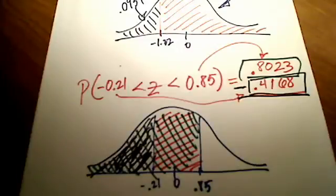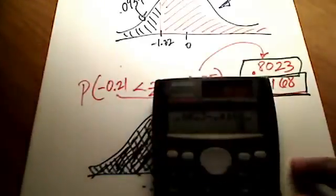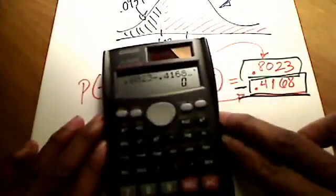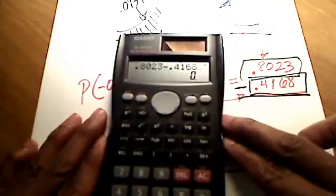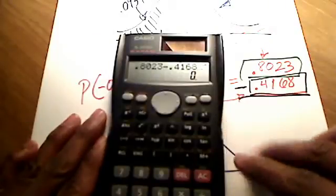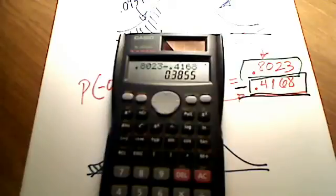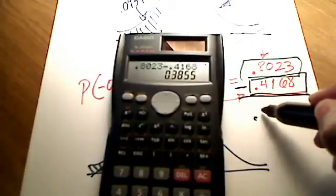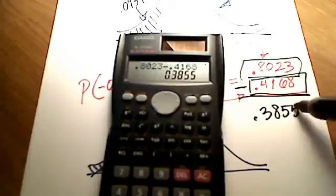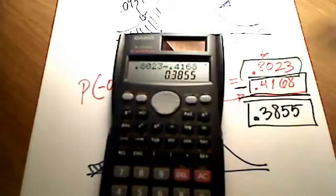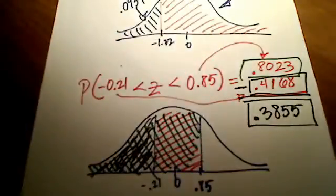So here it is, 0.4168. I'm just kind of doing this on my calculator, but I'll show you what I just did. I punched in 0.8023 minus 0.4168. I'm going to hit equals, and I've got 3855. That is my total area in between, 0.3855. There we go, four numbers rounded to four decimal places. That's what I would punch in on my Math Lab.